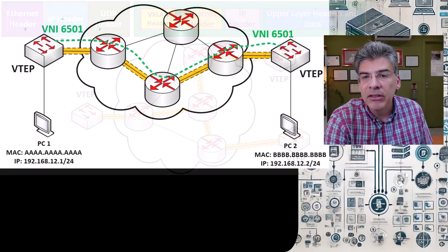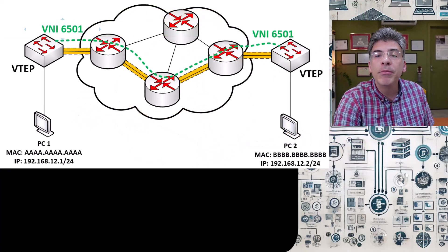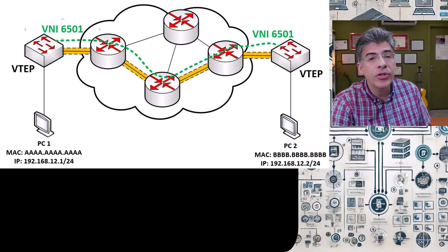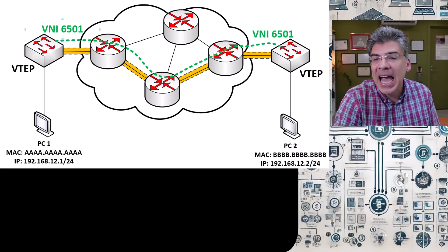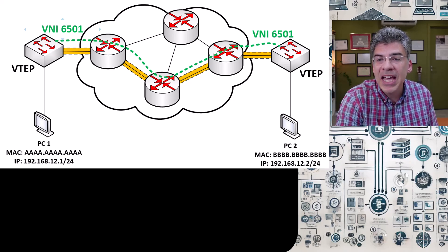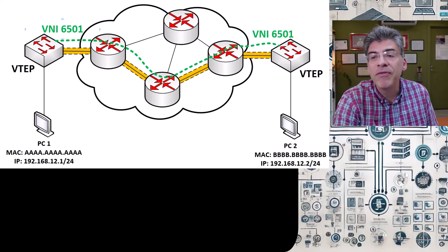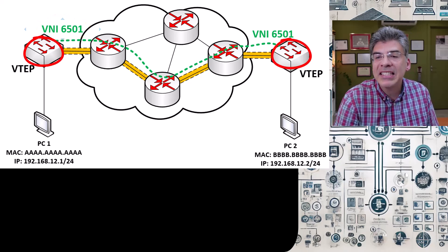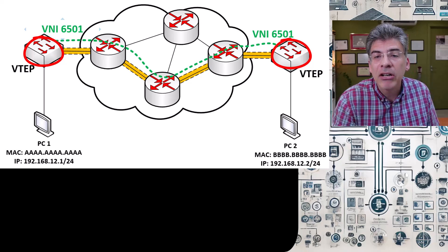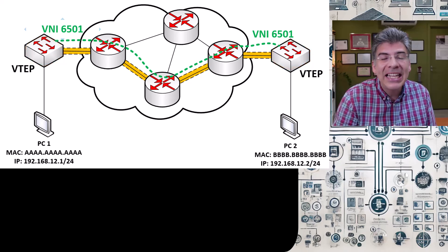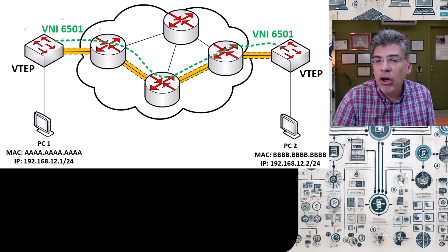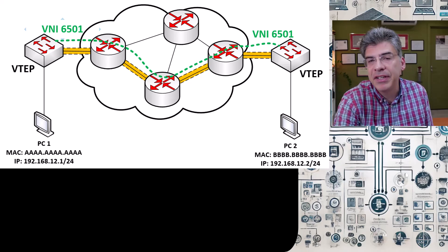Let's go through in detail how communication takes place between two hosts on the same layer two segment across a VXLAN infrastructure. Here we have two hosts, PC1 and PC2, with stated MAC addresses and IP addresses. They're on the same layer two segment, and this segment within the VXLAN infrastructure corresponds to VNI 6501. We have two VTEPs configured with VXLAN to allow this layer two segment to span the entire underlay network. That underlay network can be anything — the internet, a WAN network, an MPLS network — just as long as the VTEPs have layer three connectivity to each other.